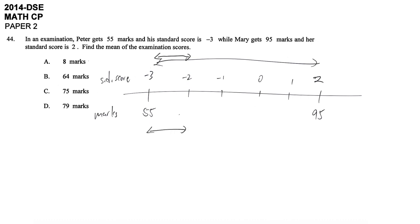So 95 minus 55 divided by the standard score difference, which is 2 minus negative 3. That means each SD is 8, each unit representing 8 marks. And that means 1 SD is 8 marks.